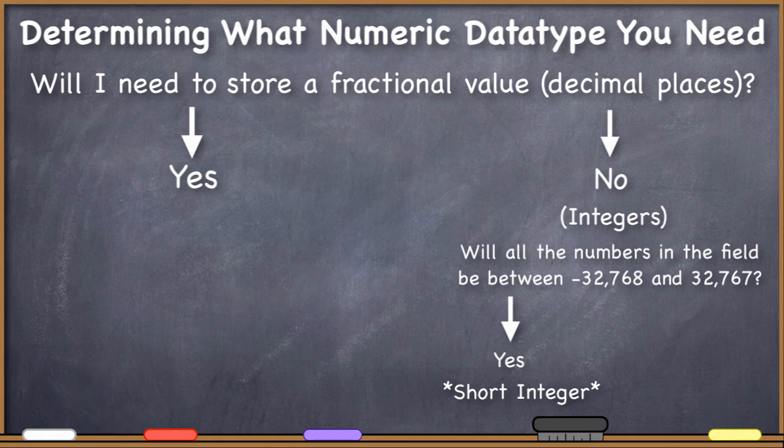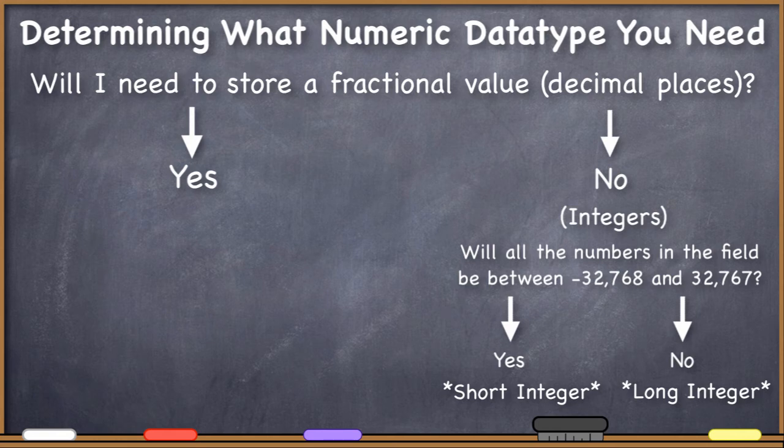What if you only need to store integers, but the numbers that you're going to need to store are larger or smaller than that? Well, you have another option, the long integer. Long integers allow you to store whole numbers between negative 2,147,483,648 and 2,147,483,647.